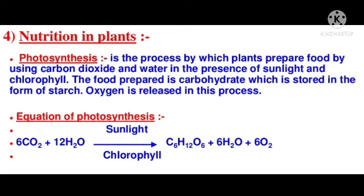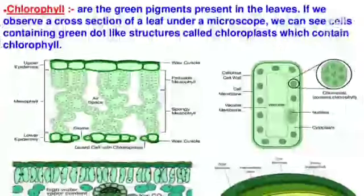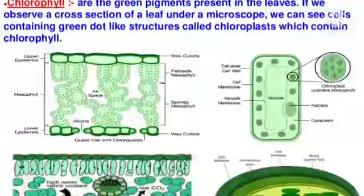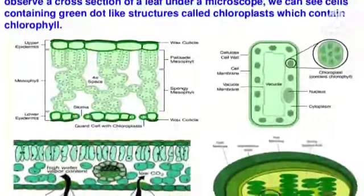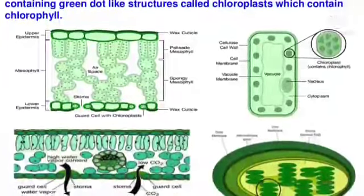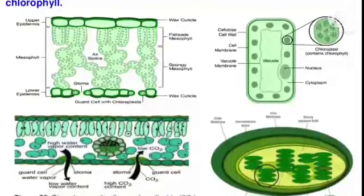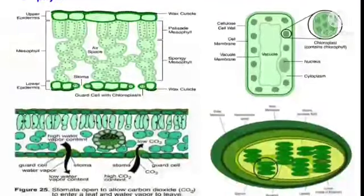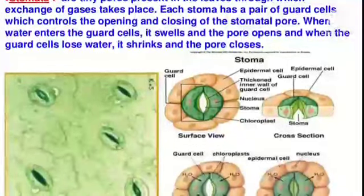The equation of photosynthesis is: 6CO₂ + 12H₂O, in the presence of sunlight and chlorophyll, gives C₆H₁₂O₆ + 6H₂O + 6O₂. Chlorophyll are the green pigments present in the leaves. If we observe a cross-section of a leaf under a microscope, we can see cells containing green dot-like structures called chloroplasts, which contain chlorophyll.